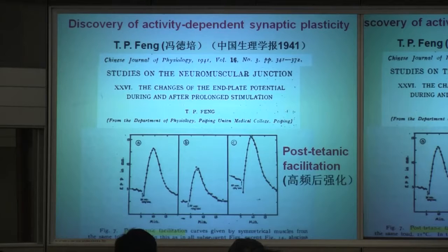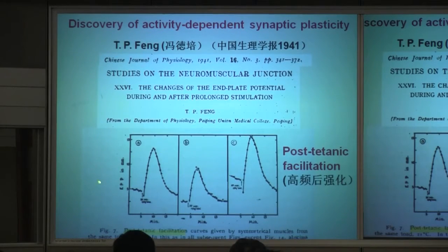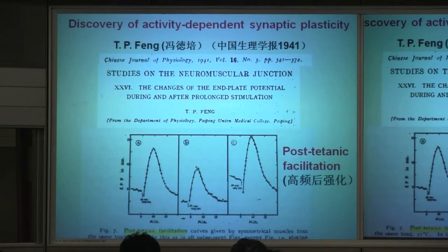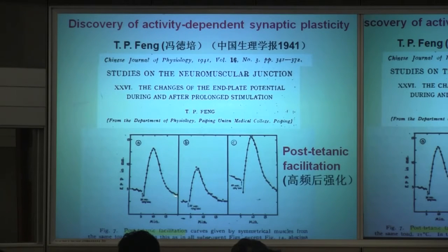Feng De Pei made a very important discovery — the first discovery of synaptic plasticity in any system. He showed at the neuromuscular junction that with high-frequency stimulation of the nerve that stimulates muscle, the amplitude of synaptic transmission after that stimulation — representing the efficiency of transmission — increases reliably after high-frequency stimulation. It lasts for about ten minutes, and then it decays.